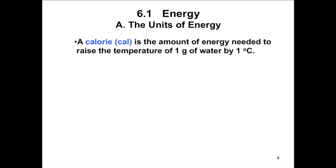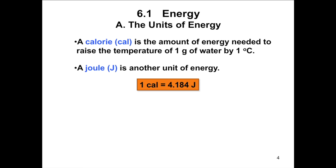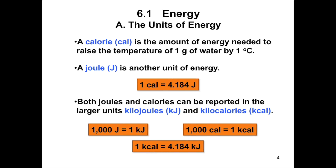In terms of units, energy can be measured using two different units: calories and joules. A calorie is the amount of energy needed to raise the temperature of one gram of water by one degree Celsius. A joule is another unit of energy and they are related as: one calorie is equal to 4.184 joules. Since both the calorie and the joule are small units of measurement, energies in reactions are more often reported in kilocalories and kilojoules. To convert a quantity from one unit to another, we set up conversion factors using methods from General Chemistry 1.